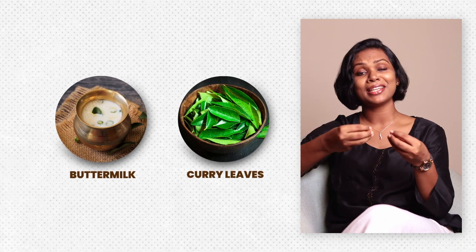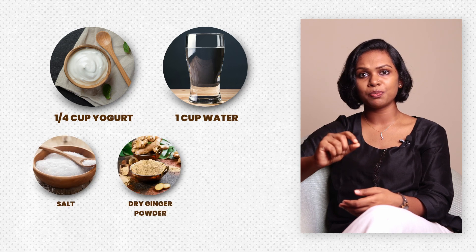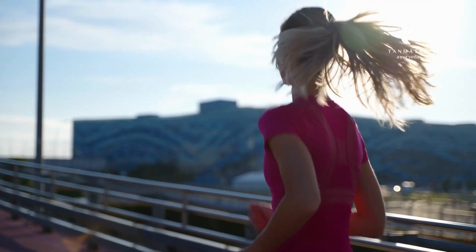Stage 1 and Stage 2 can be handled with home remedies. Buttermilk blended with curry leaves helps in metabolization of fat, reducing inflammation and fat content on the liver. Take a quarter cup of yogurt or curd, one cup water, salt, dry ginger powder, and three to five sprigs of curry leaves — blend it well, do not strain it, and consume by midday. Along with that, reduce fat-rich food and do a one-hour workout early morning between 6 to 8 AM.